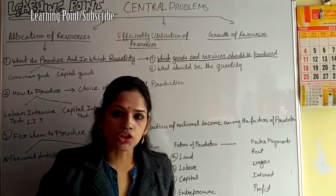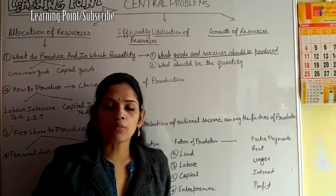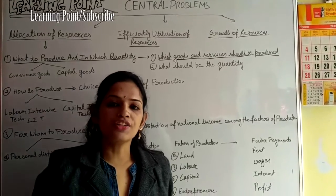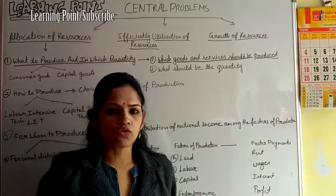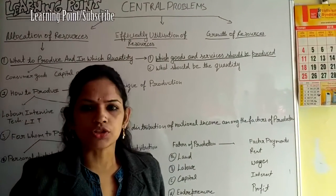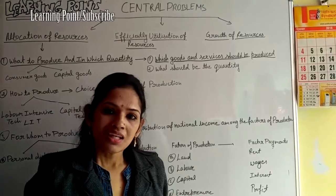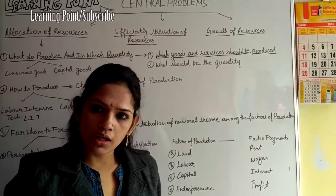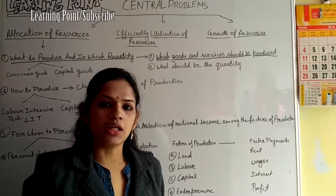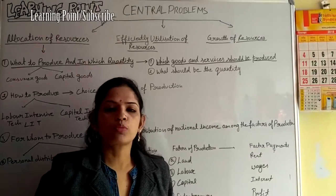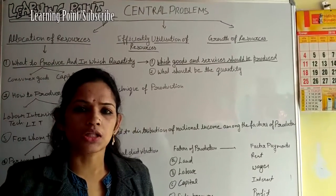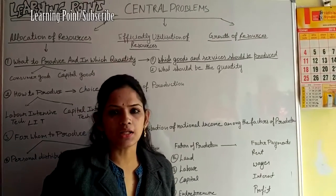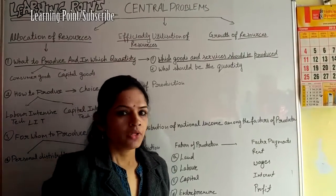If there is a war situation, the economy needs to produce tanks, guns, and weapons. If it is a peaceful situation, the economy may want to produce goods for education, books, or clothing. So any economy has to make this decision about what to produce.